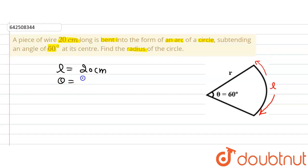We are given the angle that is getting subtended at the center, that is 60 degrees. We are supposed to find out the value of radius, that is R.